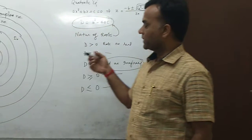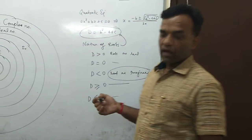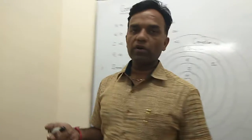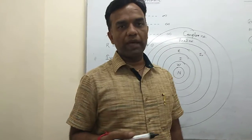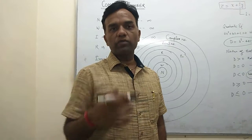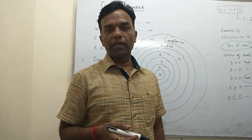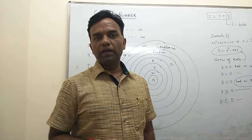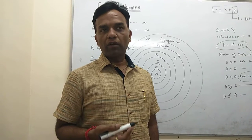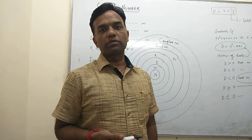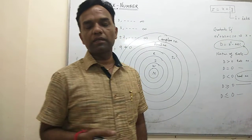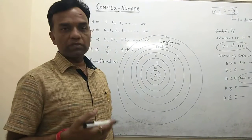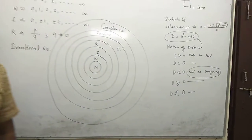Now we define the concept of imaginary. When D < 0, inside the square root sign you have a negative term. If you have a negative term under the square root, you directly say the roots are not real. So how do we find those roots? This is where we discuss imaginary roots.